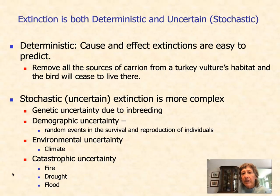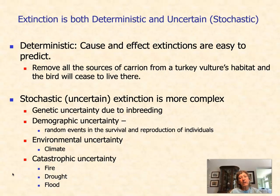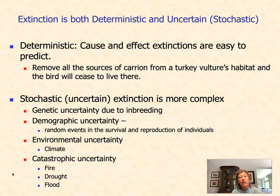Extinction is both deterministic and stochastic. Deterministic extinctions are cause and effect — they're easy to predict. For example, vultures eat carrion; if you remove all sources of carrion from a turkey vulture's habitat, you can predict that it will cease to live in that area. Many extinctions, though, are stochastic, or uncertain, and much more complex. Stochastic extinctions can be due to genetic uncertainty — we'll be talking about inbreeding later in the course — or demographic uncertainty, where random events such as fire or floods affect the survival or reproduction of individuals.